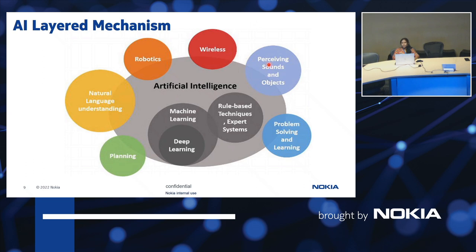Next, perceiving sounds and objects. For example, we have a cat and a dog. How do you identify them based on sound? A cat says meow and a dog says woof — the same intelligence is provided to a computer to identify what is a dog or a cat. Then comes problem solving and learning, where AI has its own intelligence to solve problems and learn from the solutions provided.